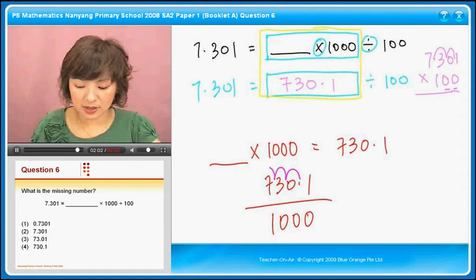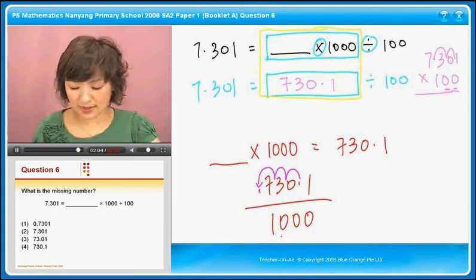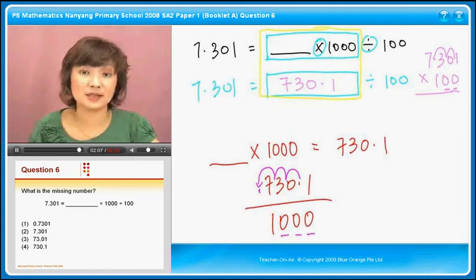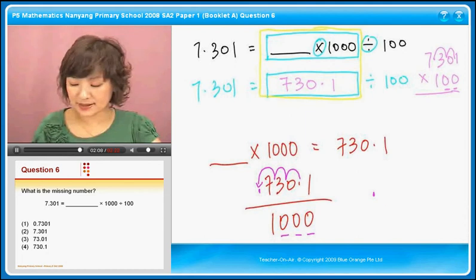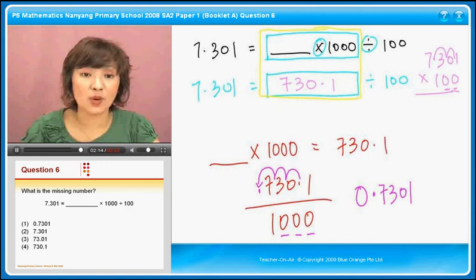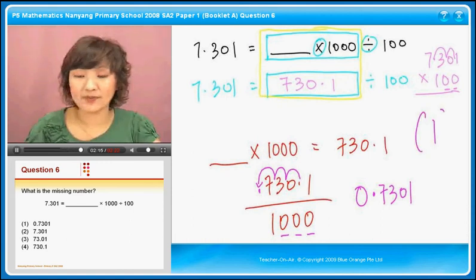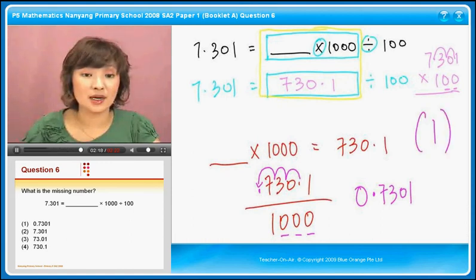1, 2, 3. Why 3? Because 1, 2, 3. There are 3 spaces. So if I write it down, I have 0.7301. 0.7301. That would be option 1. That's 0.7301 as my answer.